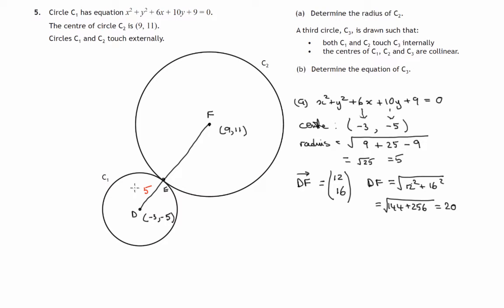So the whole line from d to f is 20. This part of it is 5. So this remainder e to f will be 15. So we've discovered the radius of circle C2 is equal to 15 units. So that's part A.